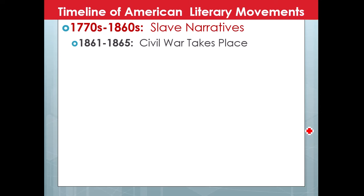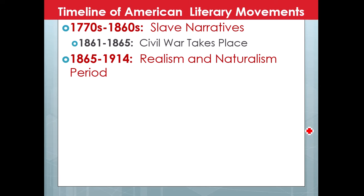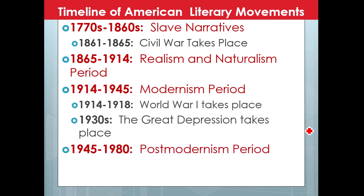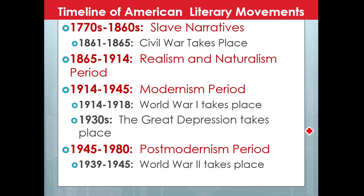From the 1770s to the 1860s, we also see a lot of slave narratives, and we'll be reading one of those for this course. We then have the Civil War taking place, 1861 to 1865, and that is where the first half of our American literature classes ends. American literature Part 1 at our school goes from the beginnings to the 1860s. Part 2 picks up after the 1860s and we see realism and naturalism appear, then the modernism period during World War I through the Great Depression and up until World War II, and then after World War II is the postmodern period.